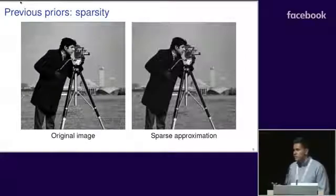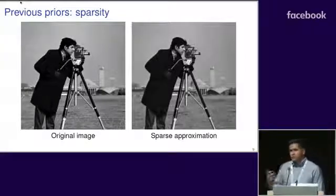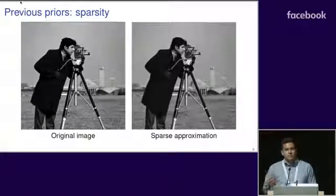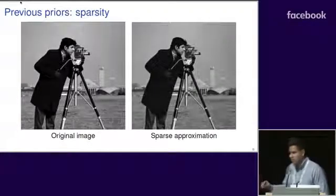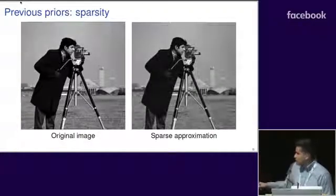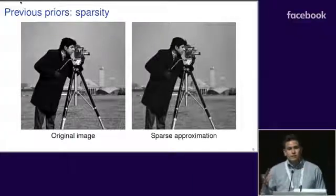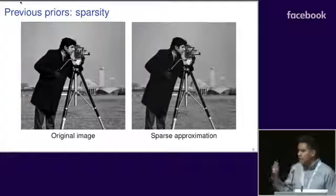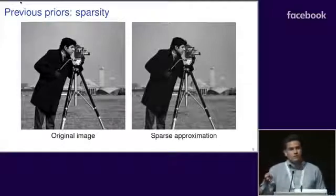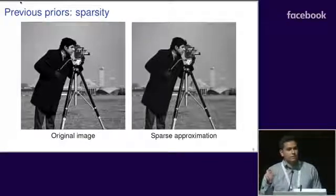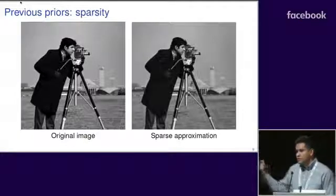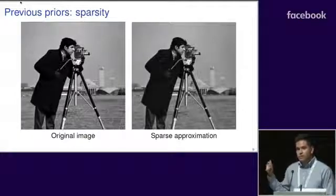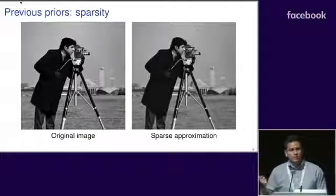Natural images are nearly sparse with respect to a wavelet basis, meaning that in that basis they can be approximated by something sparse. As an example, consider the following two images. The image on the left is a photograph, while the image on the right was created by taking a wavelet transform of the image on the left, keeping only 10% of the largest wavelet coefficients. There's still a high fidelity between the two images, even though the image on the right only has 10% of the wavelet coefficients.